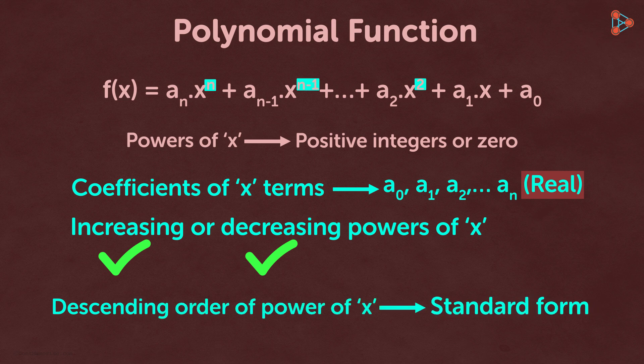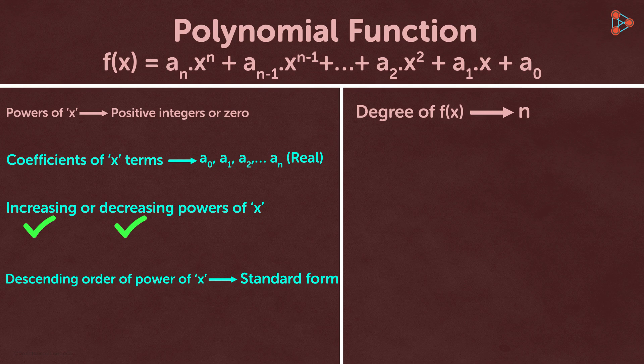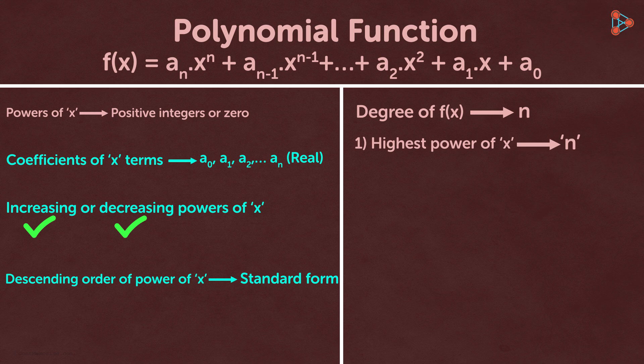Now what is the degree of a polynomial function? Can we say that the degree of a function is n? This happens when the highest power of x is n, and the coefficient of x raised to n, a_n, is not equal to 0.